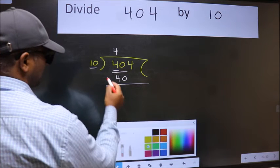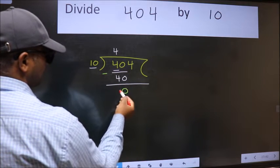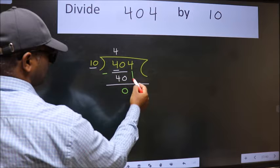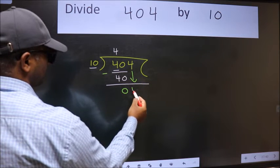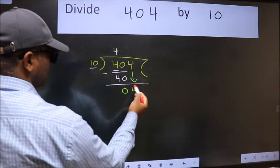Now we should subtract. We get 0. After this, bring down the beside number. So 4 down. After this step,